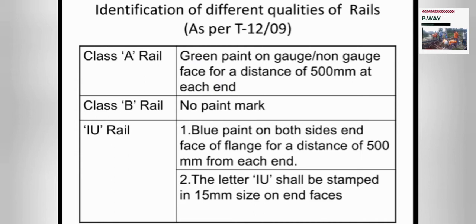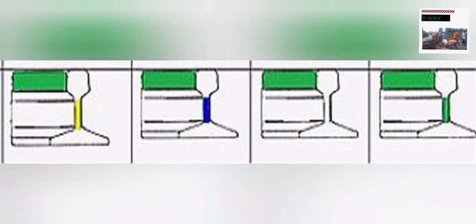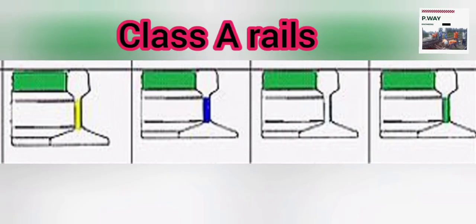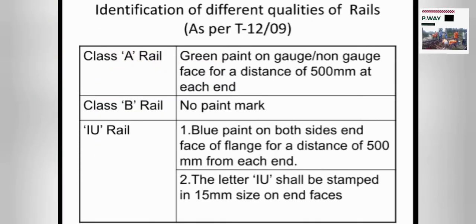Class A rails are painted with green color on the gauge face and non-gauge face for 500mm from the end of the rail. There is no paint mark on Class B rails. Industrial use rails are painted with blue color on both flanges for a distance of 500mm from the end of the rail.